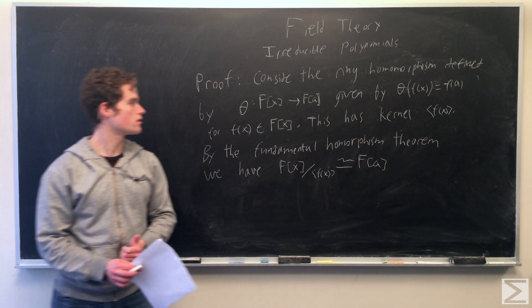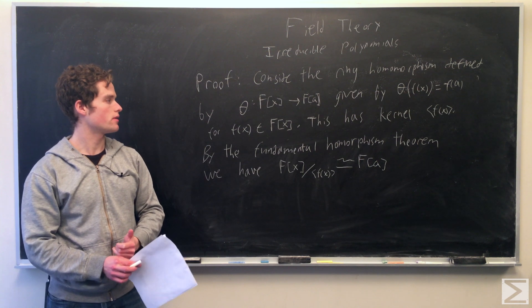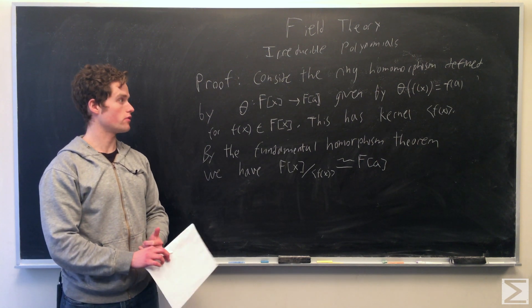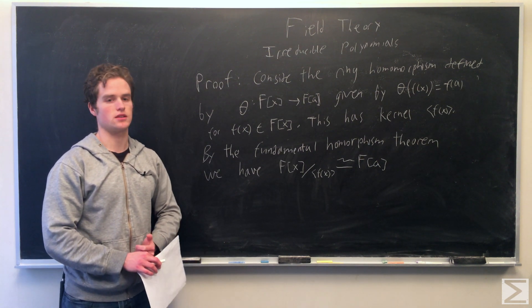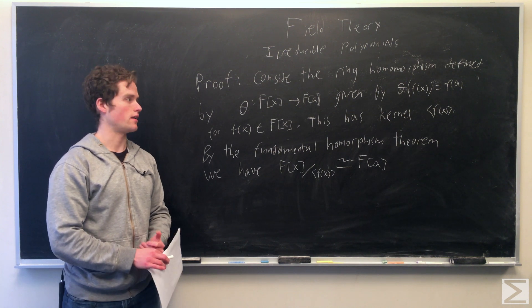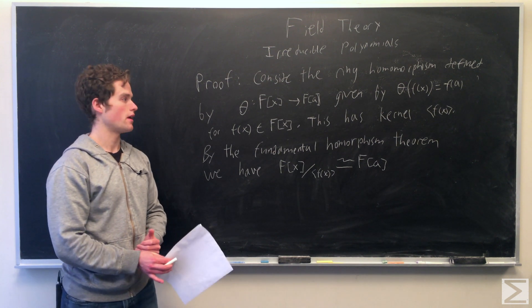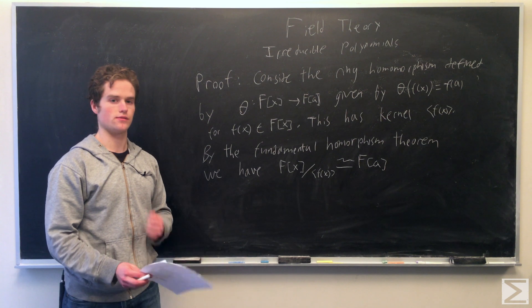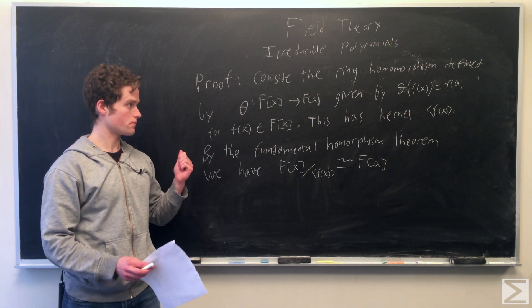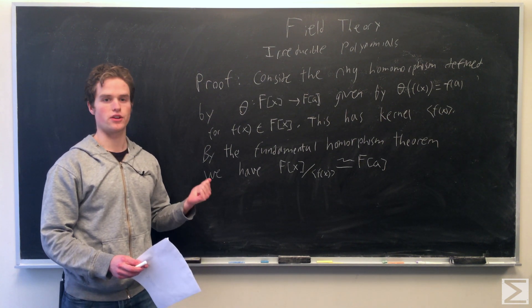So this map, we're going to look at its kernel. So this kernel, we know f of a equals zero, and a multiple of f of a equals zero. And that by using the division algorithm arguments can show the kernel is in fact the ideal generated by f of x.